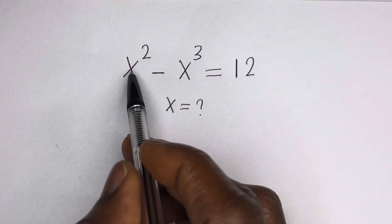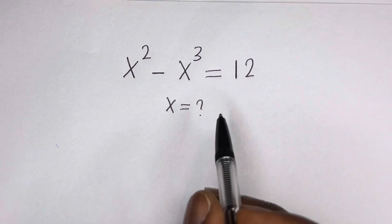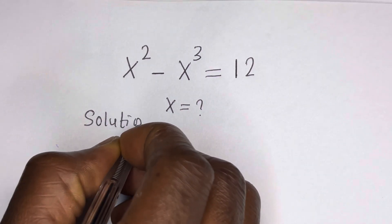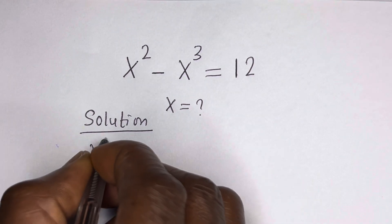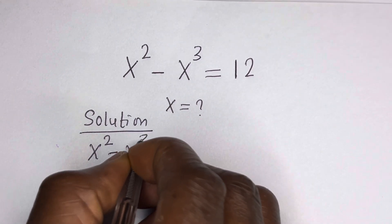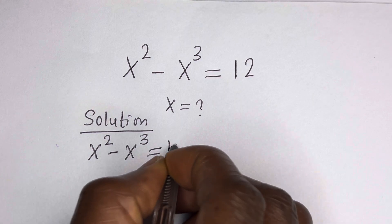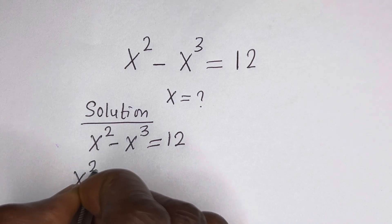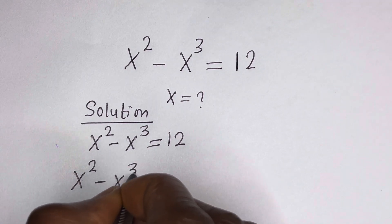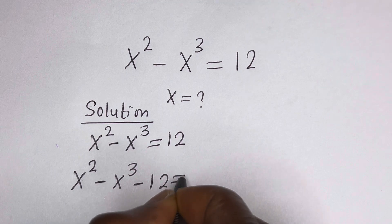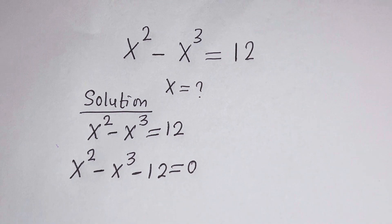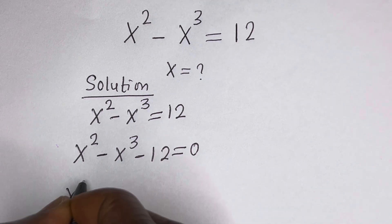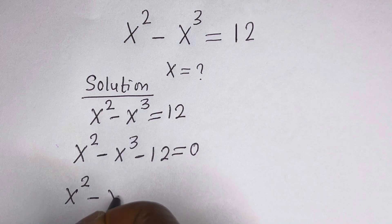Hello. How to solve for s in this equation: s squared minus s raised to power 3 is equal to 12. Solution: we have s squared minus s raised to power 3 is equal to 12, which gives us s squared minus s raised to power 3 minus 12 is equal to 0.